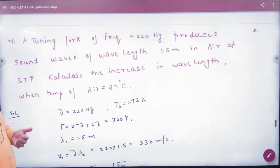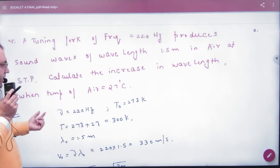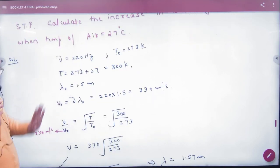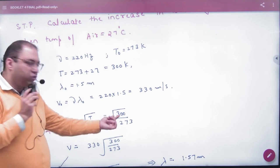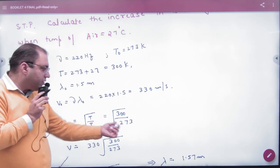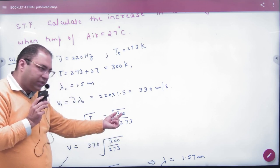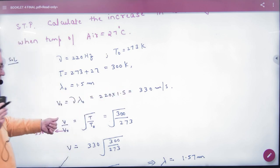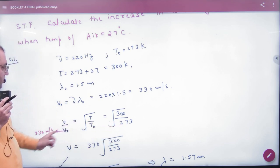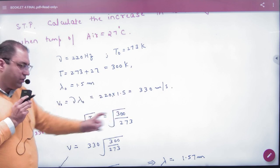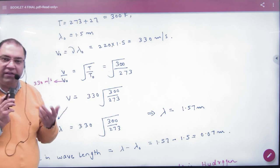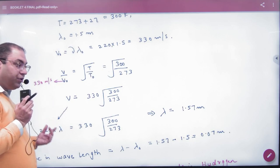Lambda pata hai, multiply karke velocity bhi pata hai kitne temperature pe: 273 pe. Question hai: wave length kitni badh gayi jab maine temperature zero ki jagah 27 kar diya. To naya temperature kitna kar diya: 300. Velocity directly proportional to under root of temperature hai. To pehle temperature 273 hai, naya temperature 300 hai. Velocity ki value V naught pehle V naught hai jo nikal li hai hamne kitni: 330 hai, aur nayi velocity V hai.